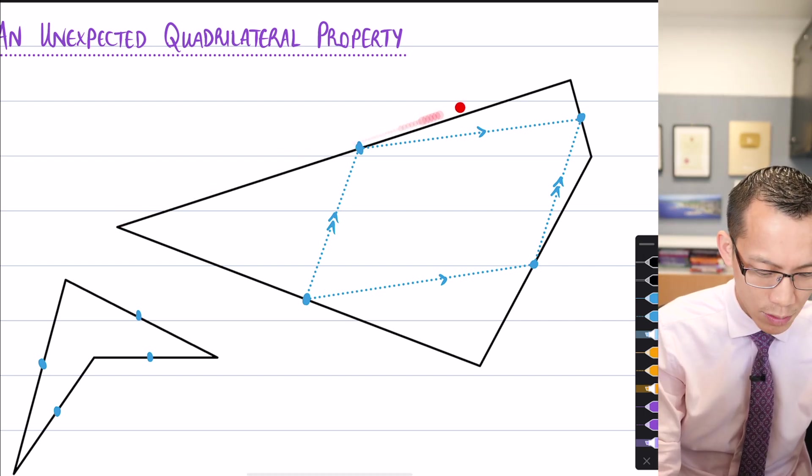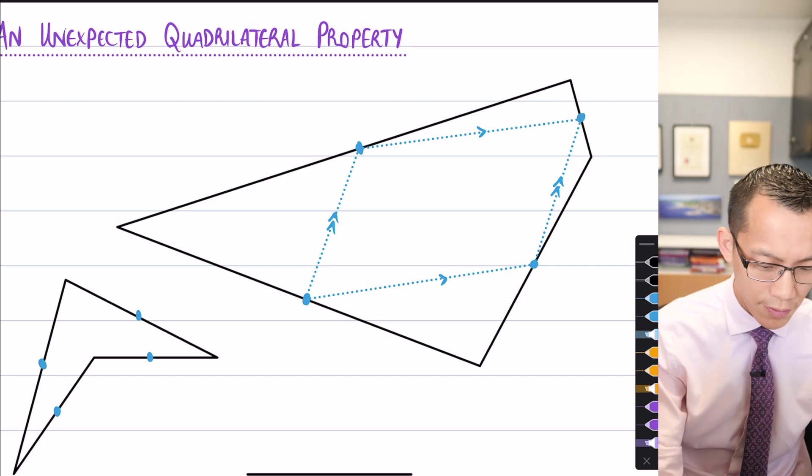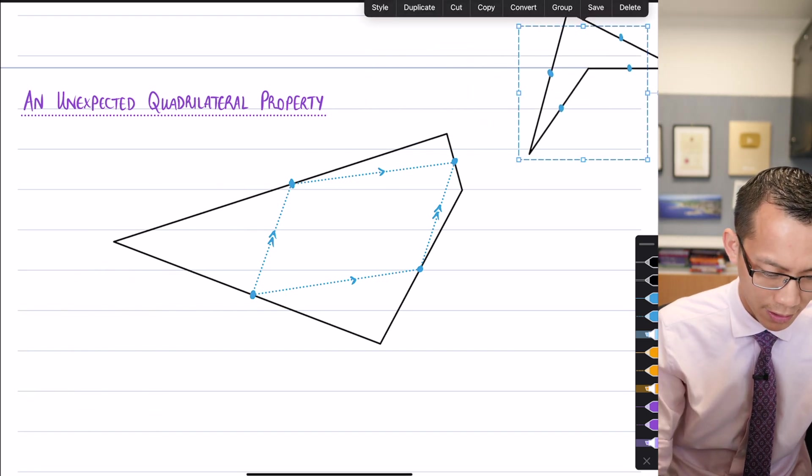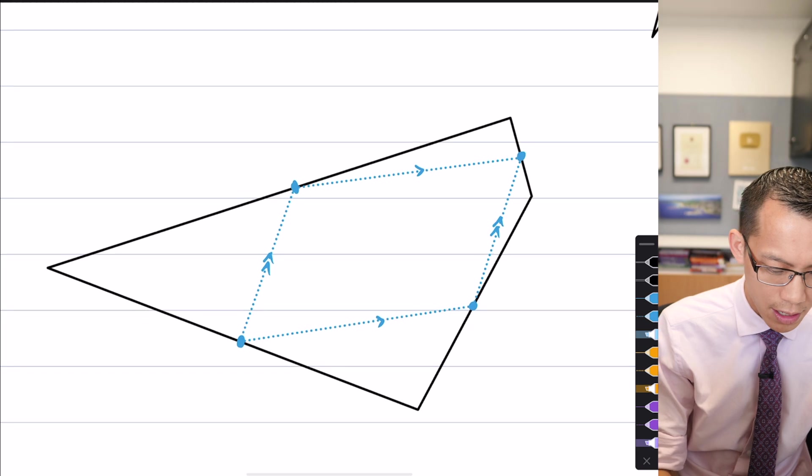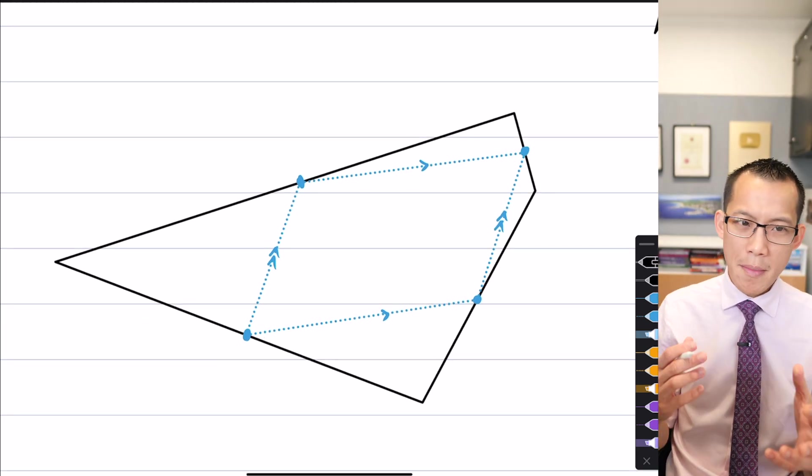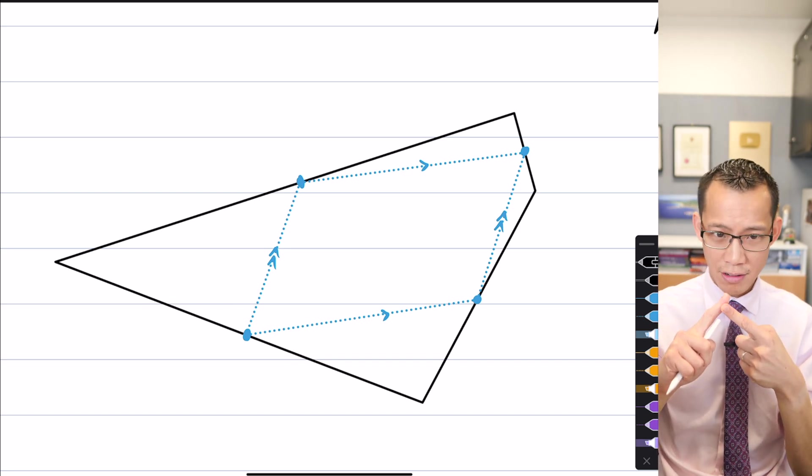Here's what we're going to do, I want you to think about these four sides, one, two, three, four, the four sides of the original quadrilateral, I want you to think of the four sides of this original quadrilateral as four vectors. Now, remember, vectors are direction and magnitude.